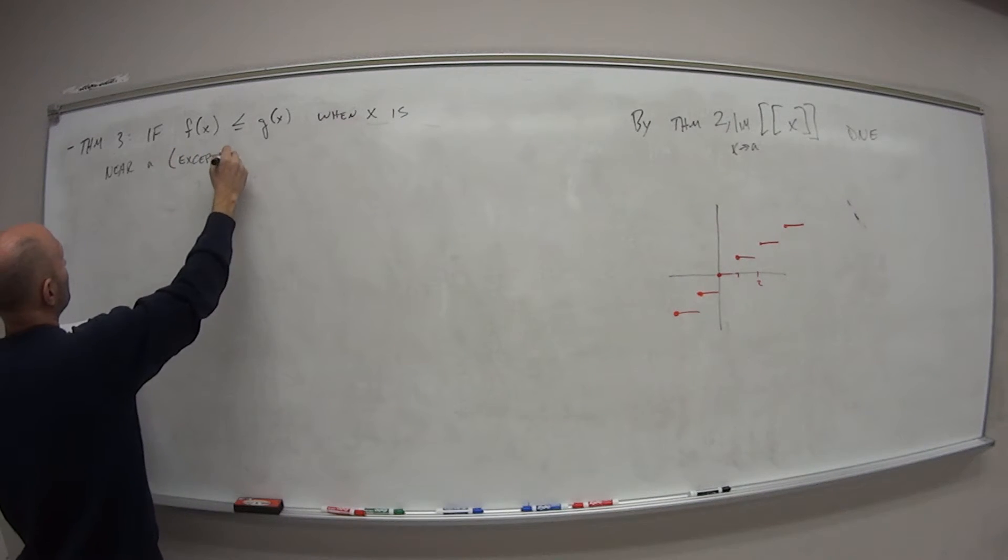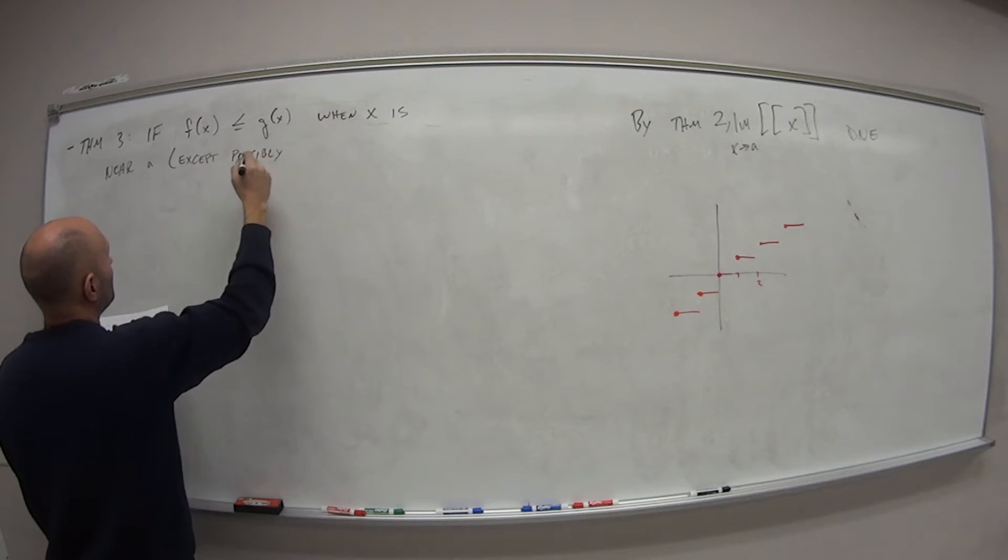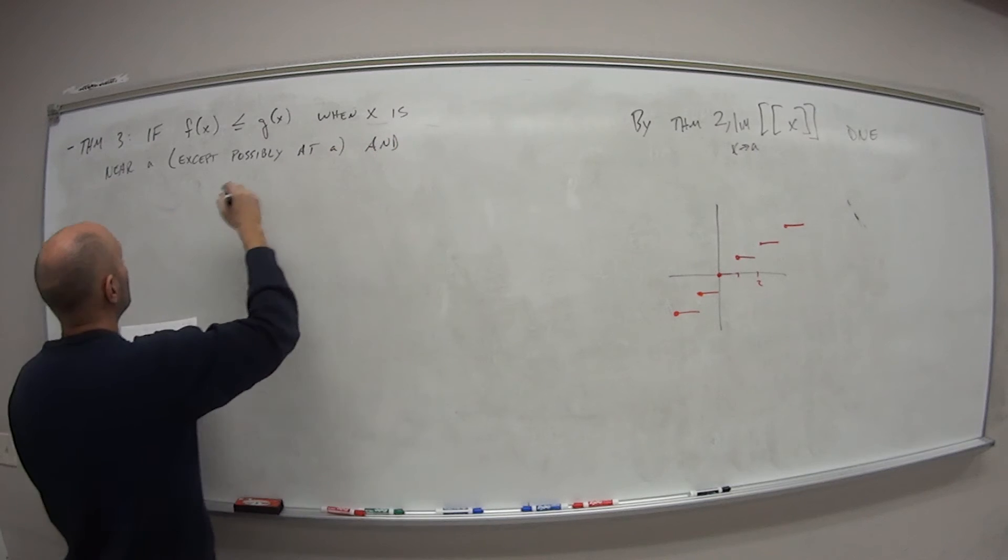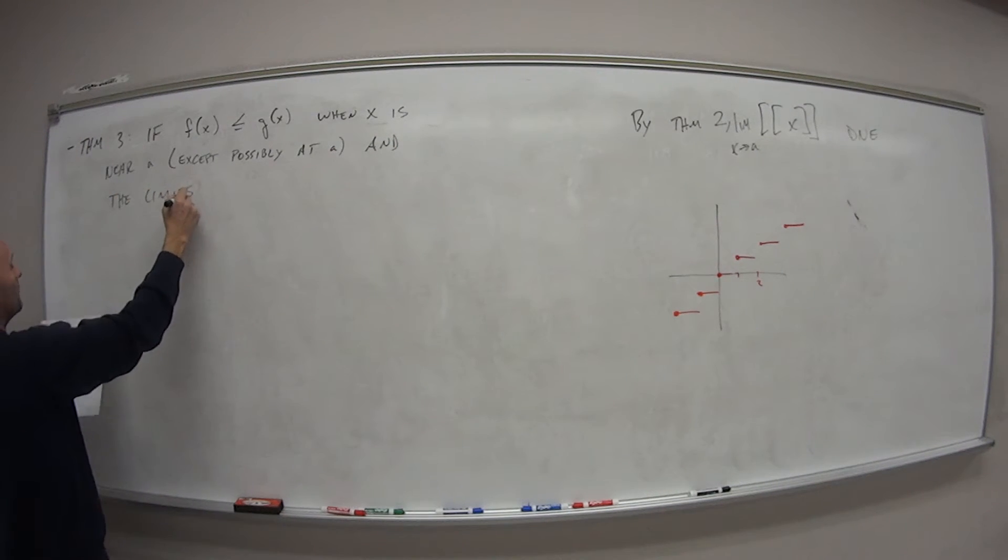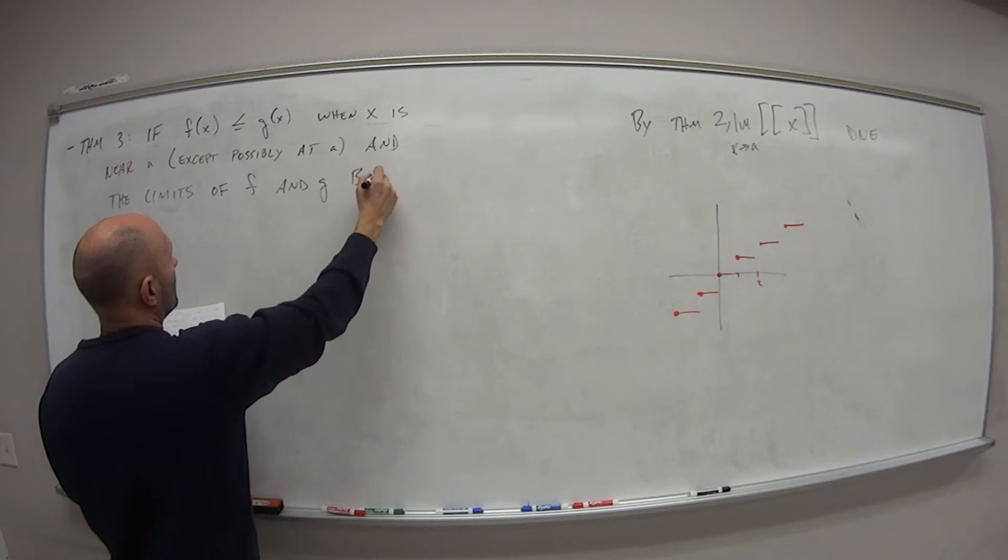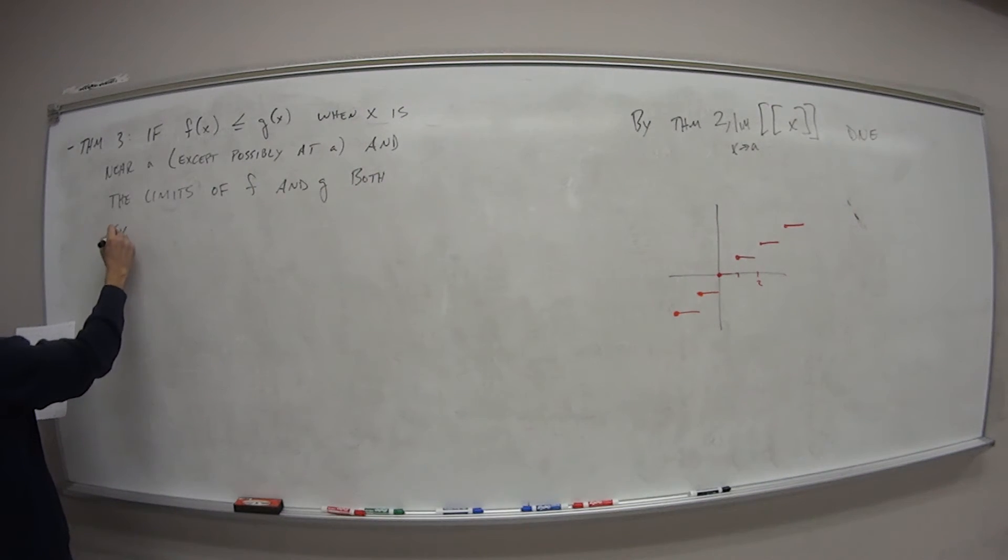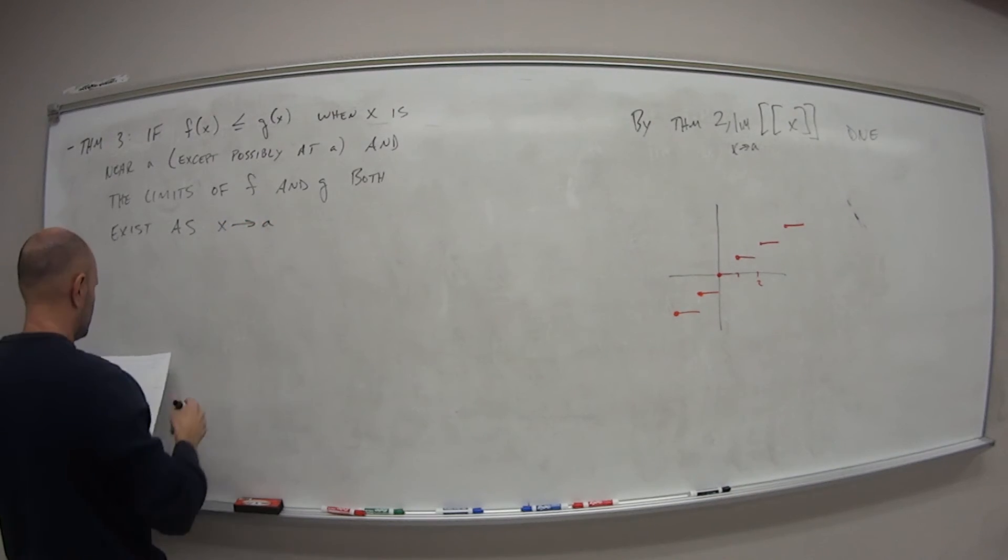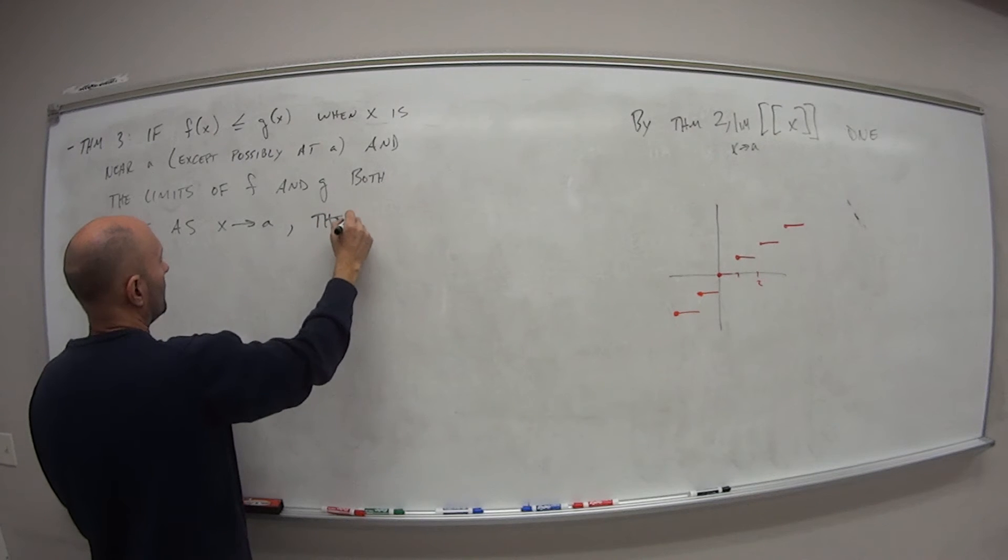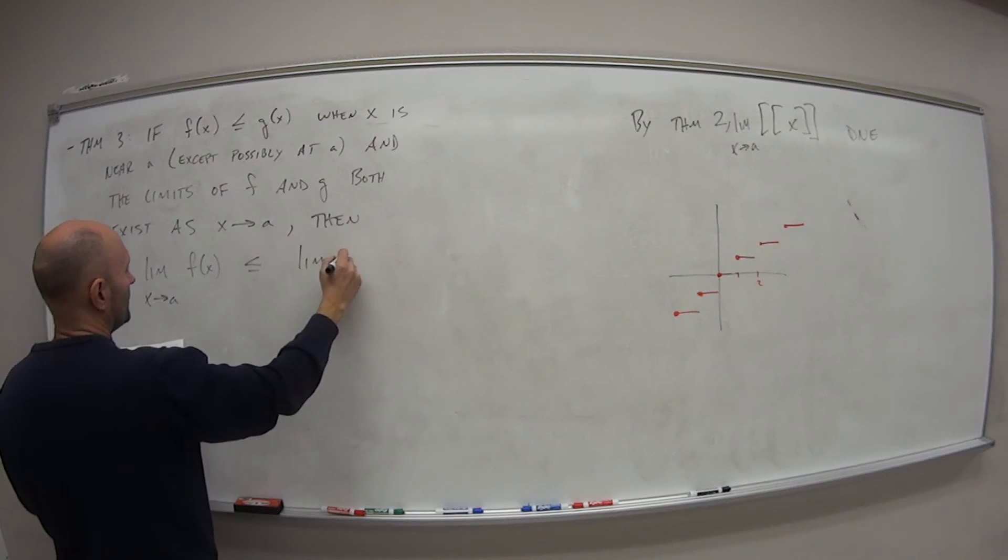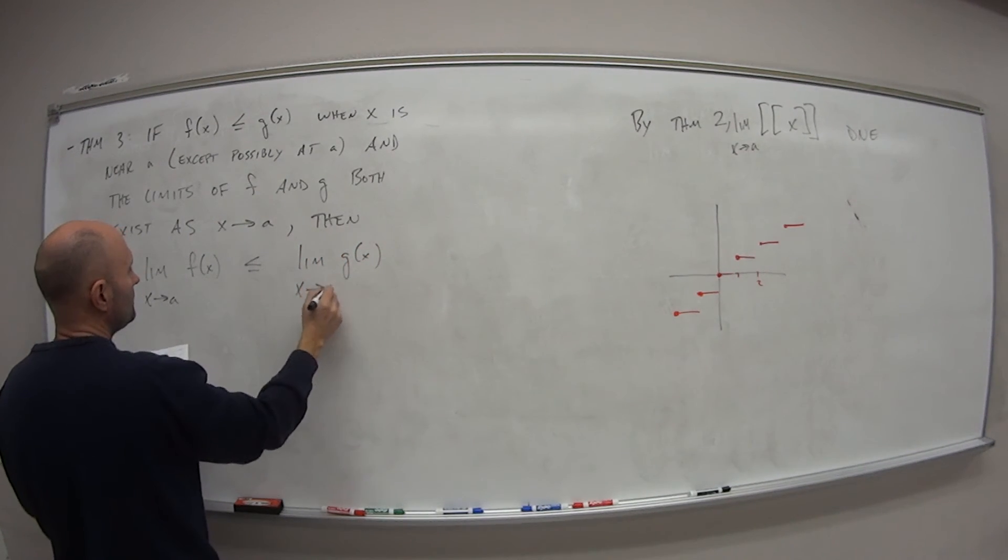Again, because with these limits, we're not actually concerned with the value right at that value. So except possibly at A. And the limits of F and G both exist. As X approaches A, then the limit of F of X as X approaches A is less than or equal to the limit of G of X as X approaches A.